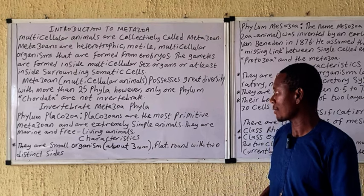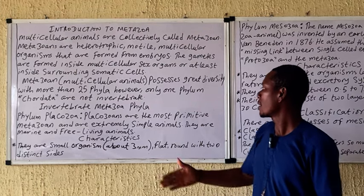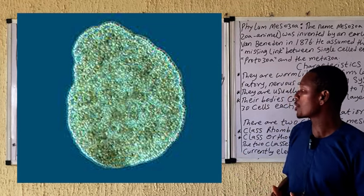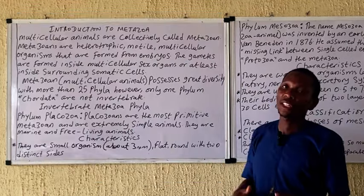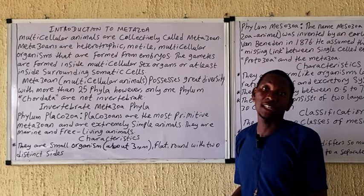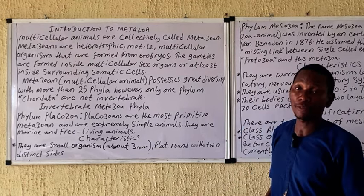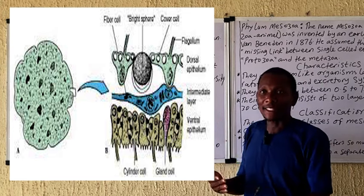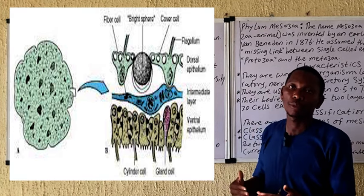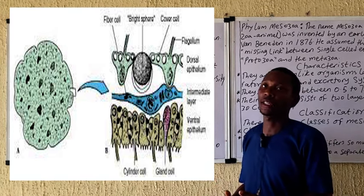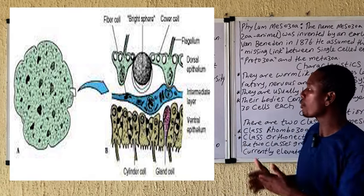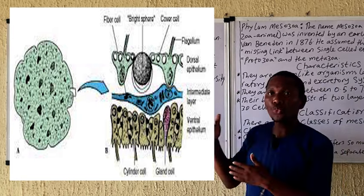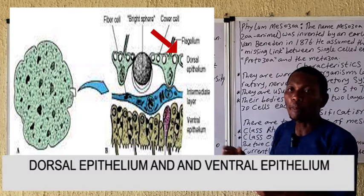What are their characteristics? You can see from the diagram of Metazoa being displayed on the board that they are actually spherically round. They are small because they are so primitive. They are flat like a plate, which gives them the name Placozoa. This organism, as you can see from the diagram on the board, possesses two layers.